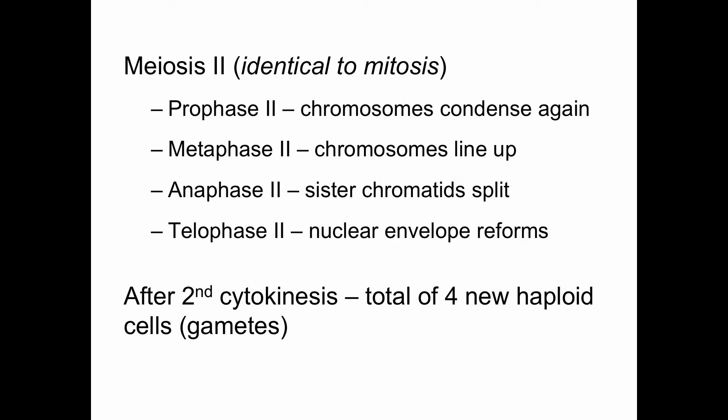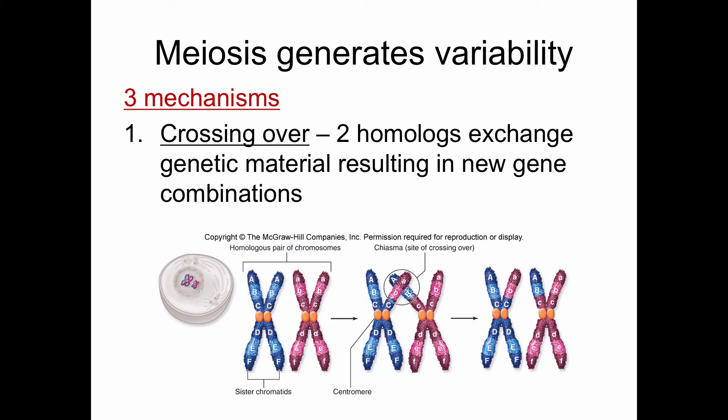If both the sperm and egg had a full set of chromosomes and pooled them, we'd have twice as many chromosomes as we need — which would not be compatible with life. So at the end of meiosis two, you have four haploid cells called gametes — in humans, those are sperm and egg cells.